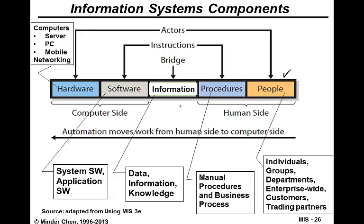We have discussed the information hierarchy, which may include data, information, and knowledge. Procedures are considered the manual procedure or part of the business process.